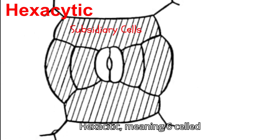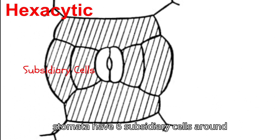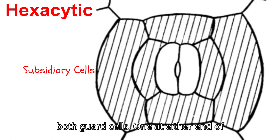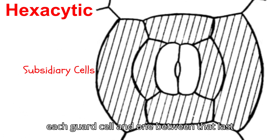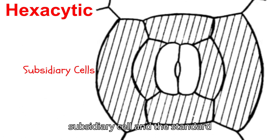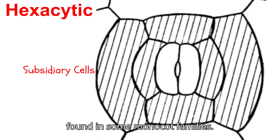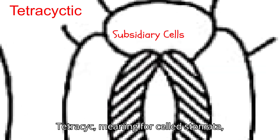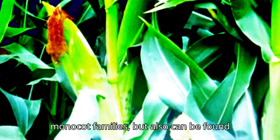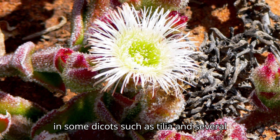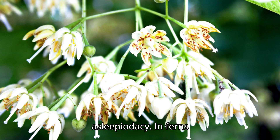Hexacytic, meaning six-celled, stomata have six subsidiary cells around both guard cells: one at either end of the opening, one adjoining each guard cell, and one between that last subsidiary cell and the standard epidermis cells. This type can be found in some monocot families. Tetracytic, meaning four-celled, stomata have four subsidiary cells: one on either end of the opening and one next to each guard cell. This type occurs in many monocot families but can also be found in some dicots such as Tilia and several Asclepiadaceae.